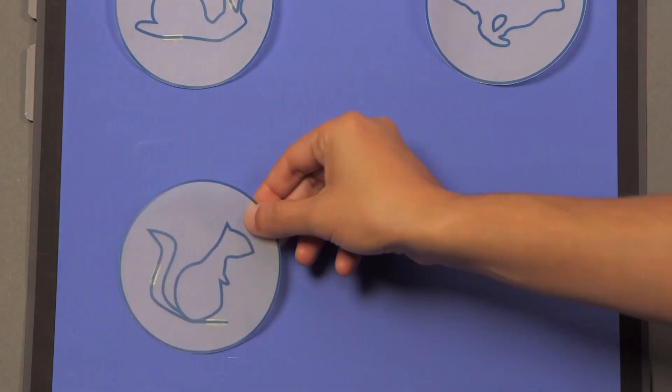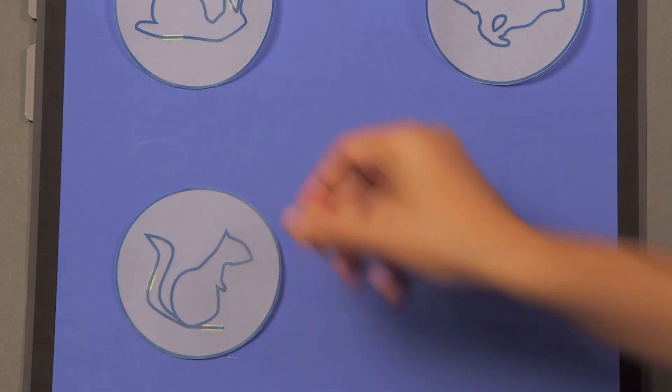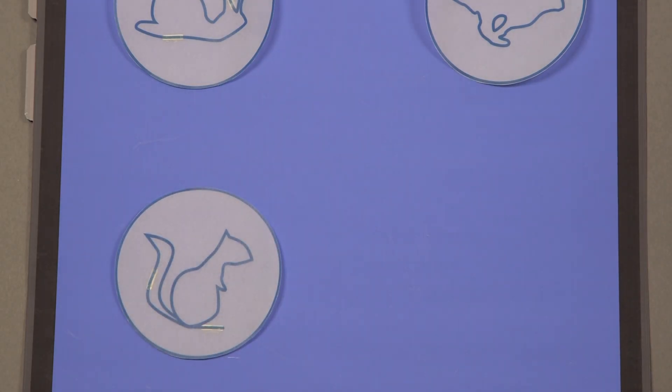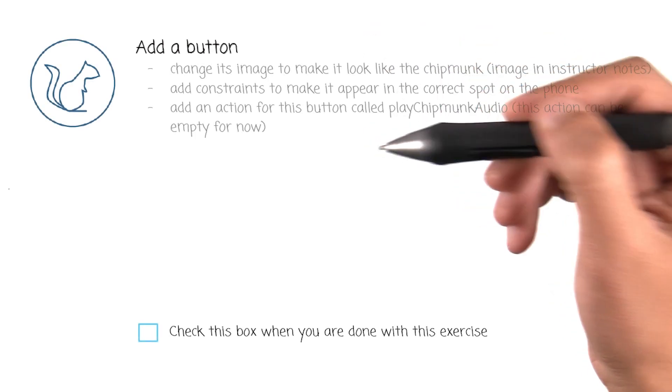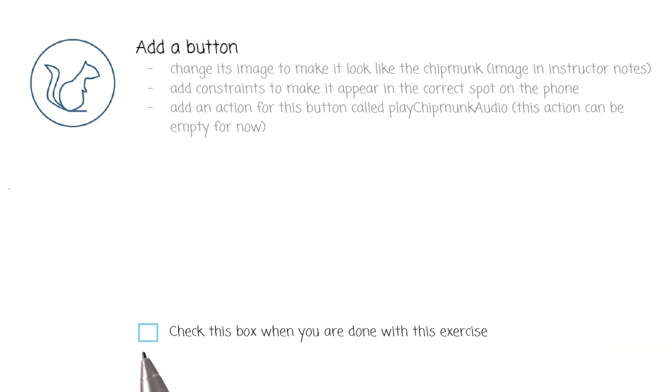We will begin by adding this button on the storyboard. To make this button work, you will want to accomplish the same tasks as before. Here they are one more time — check this box when you are done.